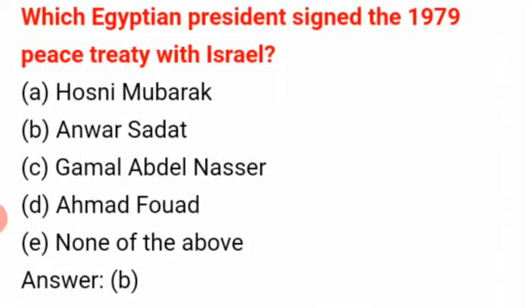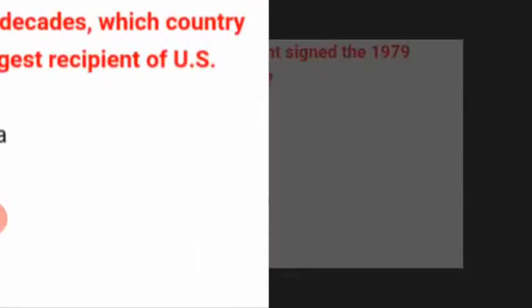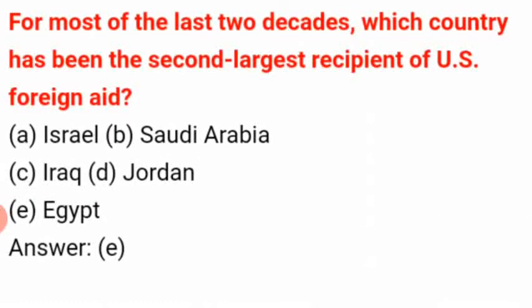Which Egyptian president signed the 1979 peace treaty with Israel? The answer is B: Anwar Sadat. For most of the last two decades, which country has been the second largest recipient of US foreign aid?